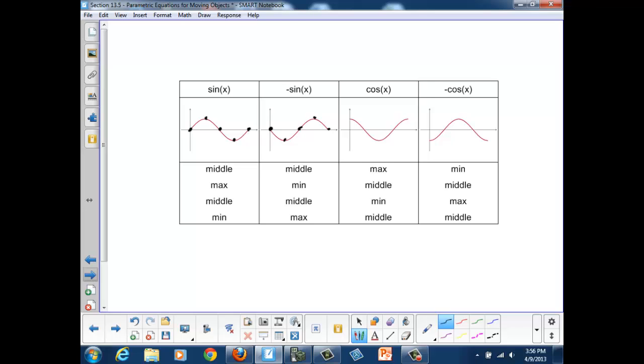Cosine, on the other hand, starts at a maximum, drops to a mid, goes down to a min, back to the mid, and then back to a max. Negative cosine flips our cosine, starts at a minimum, goes to mid, max, mid, min.